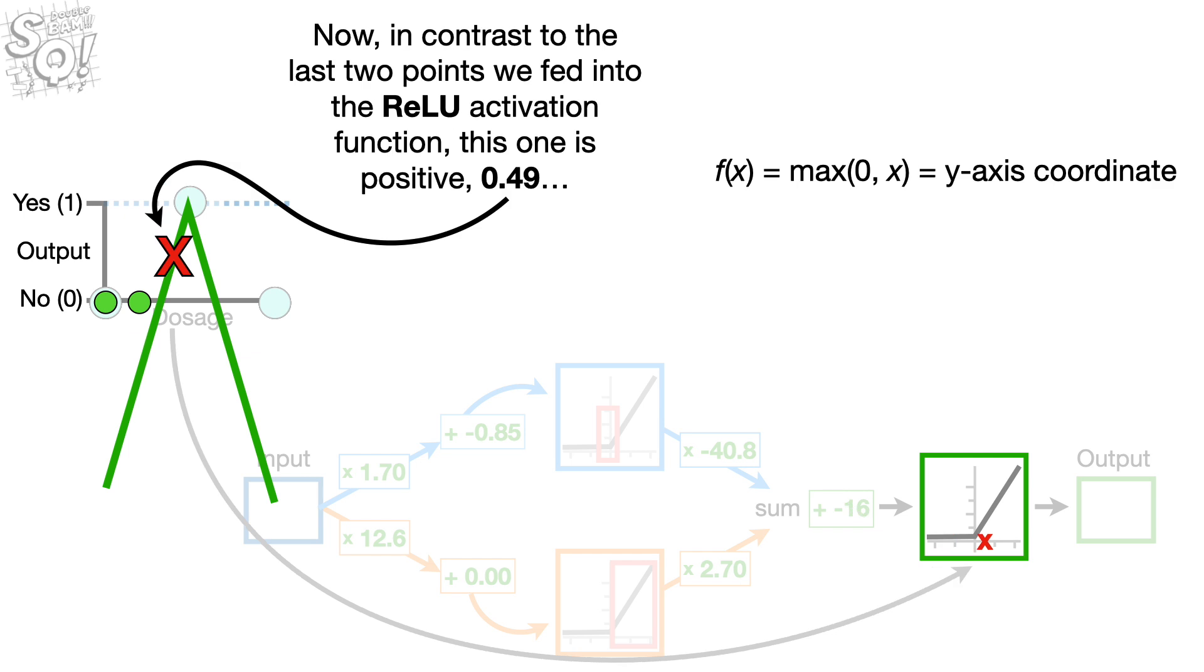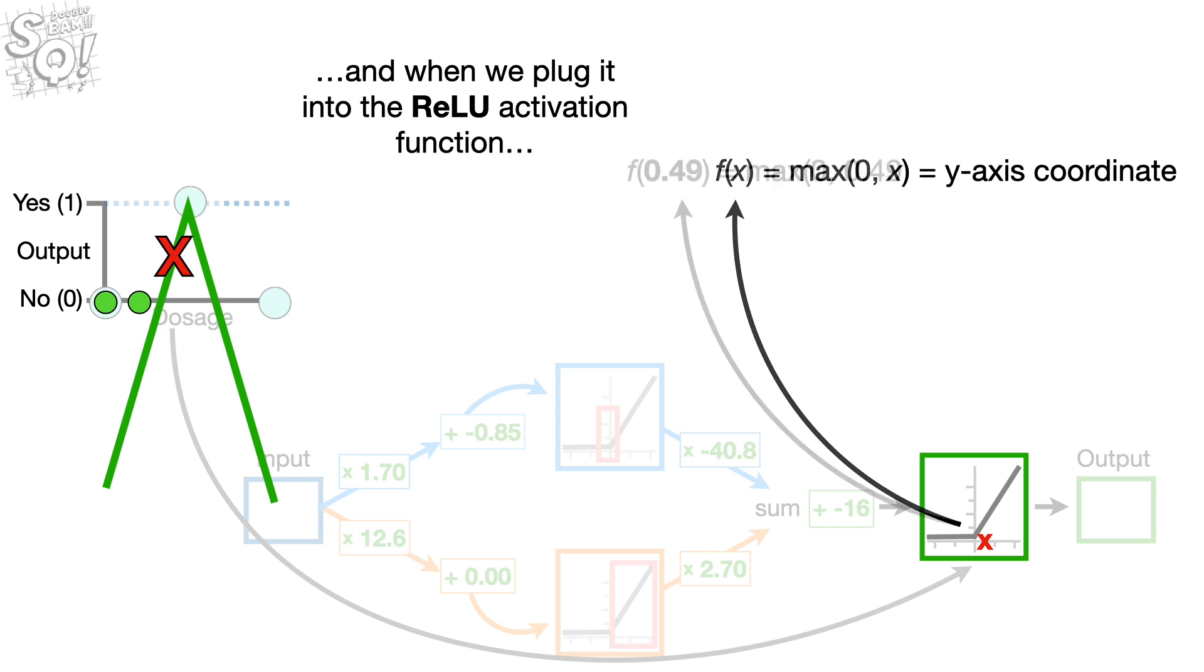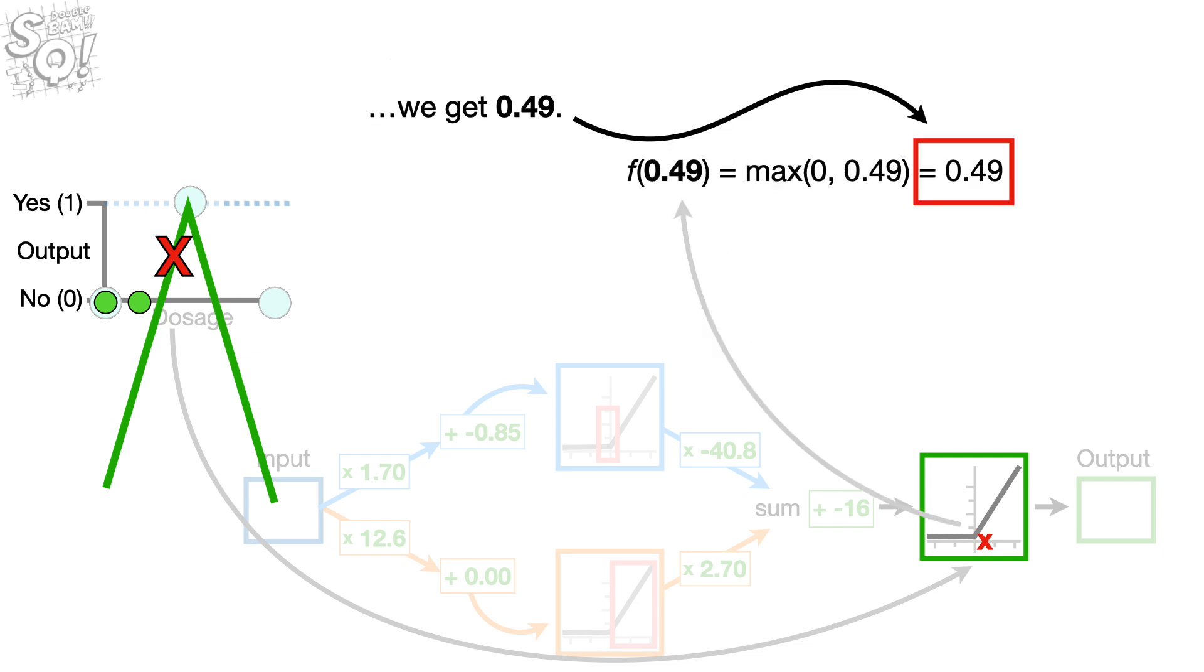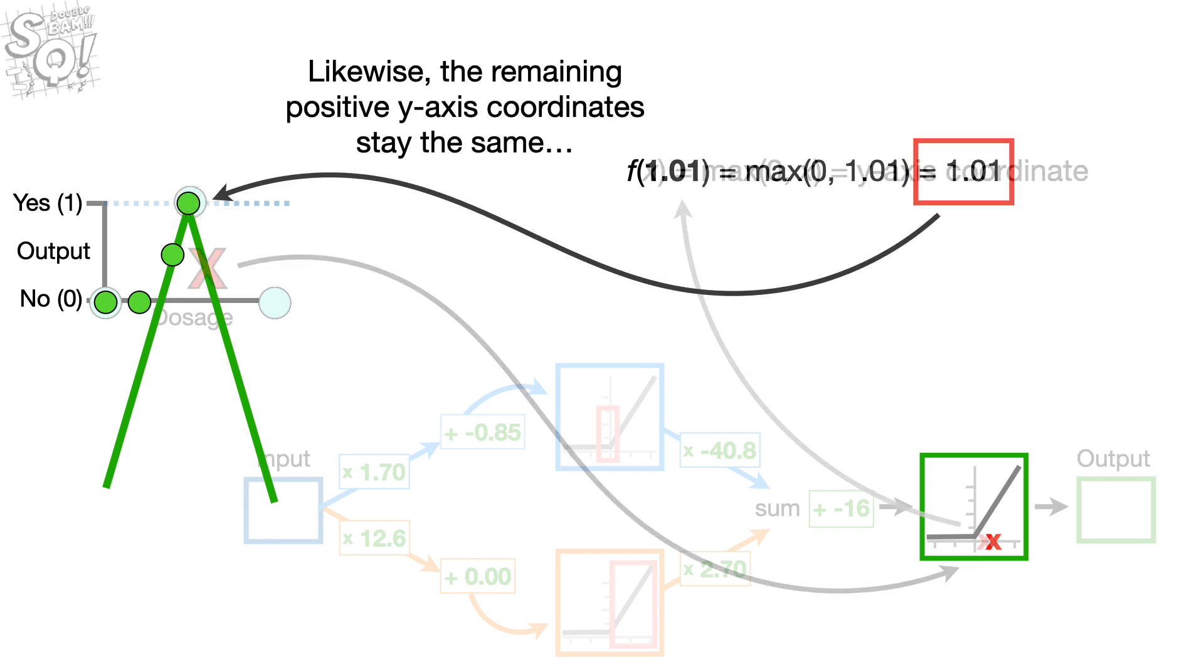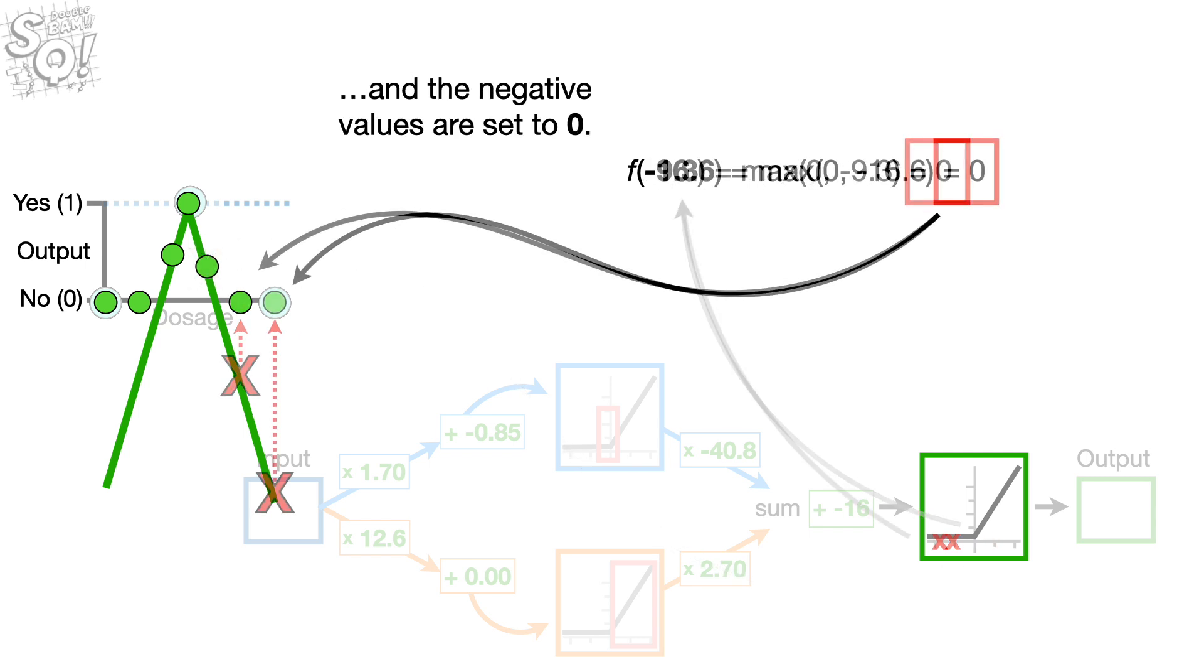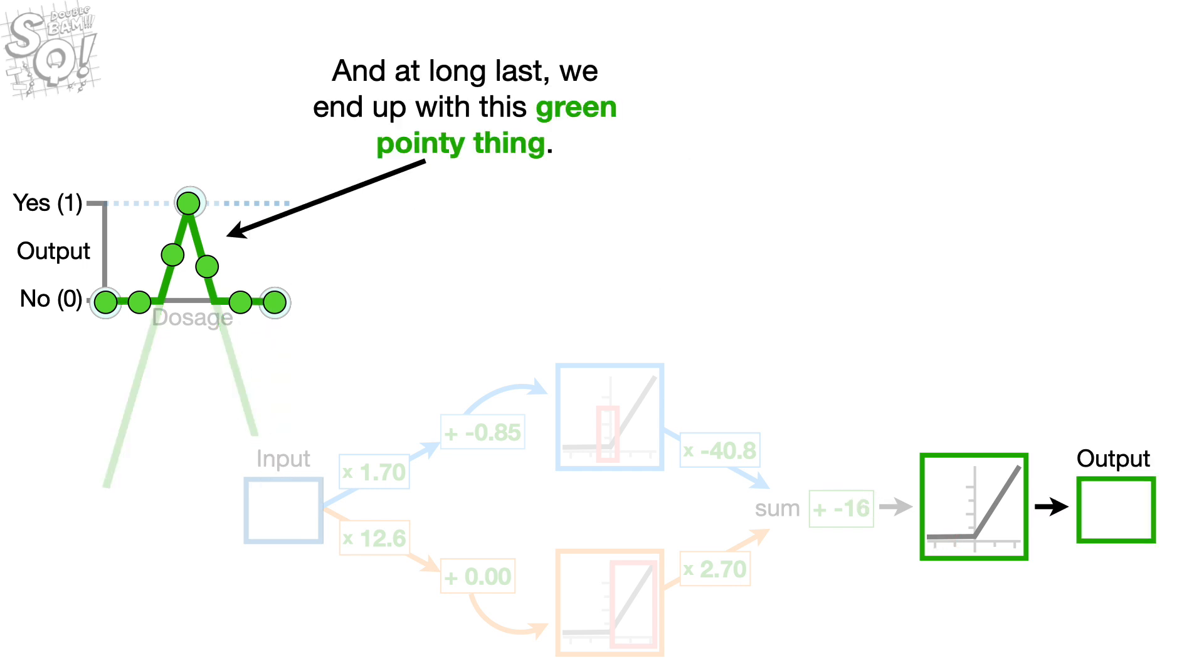Now, in contrast to the last two points we fed into the relu activation function, this one is positive, 0.49. And when we plug it into the relu activation function, we get 0.49. And 0.49 corresponds to this green dot. Likewise, the remaining positive y-axis coordinates stay the same. And the negative values are set to 0. And at long last, we end up with this green pointy thing. Double bam!